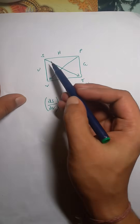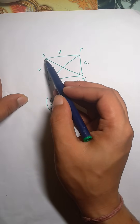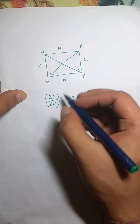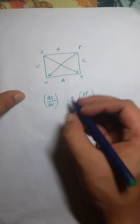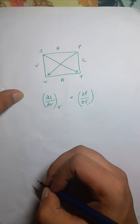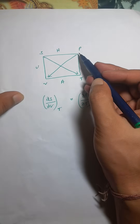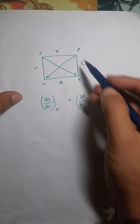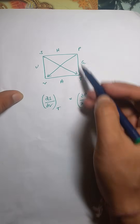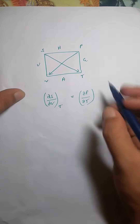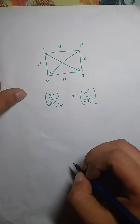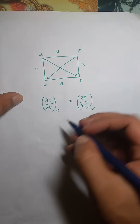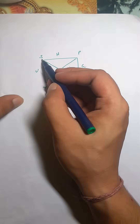Now check the arrows: the numerator is S, and the arrow goes from S to T — so it's positive. The opposite of S is T, so we write at constant temperature. For the denominator, the arrow goes from P to V — also positive. The opposite of P is volume, so at constant volume. This is our first Maxwell relation: (∂S/∂V)_T = (∂P/∂T)_V.